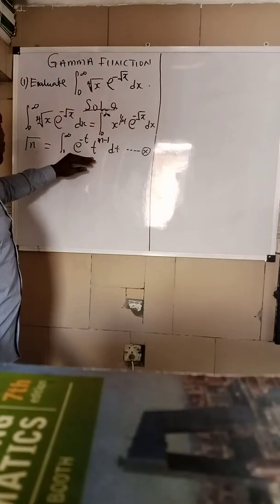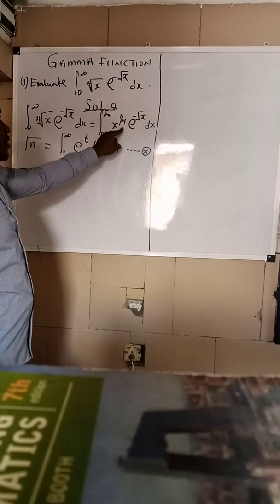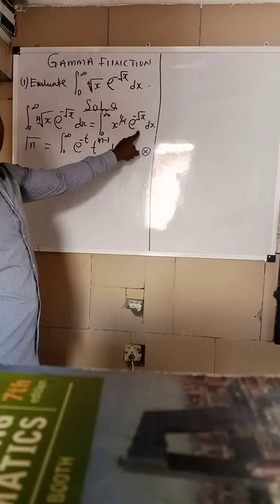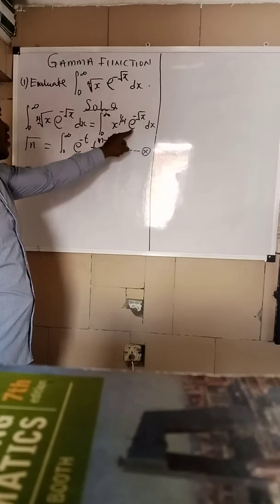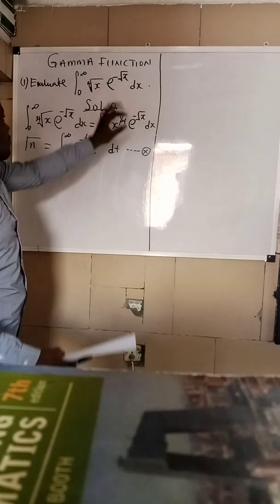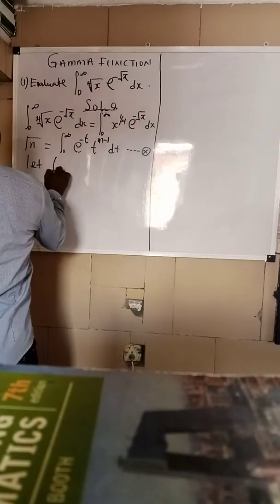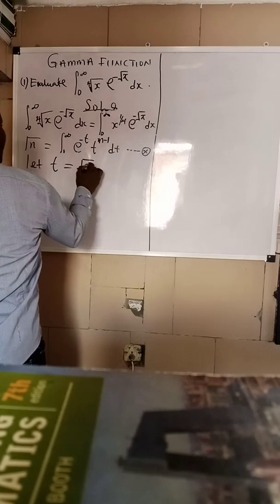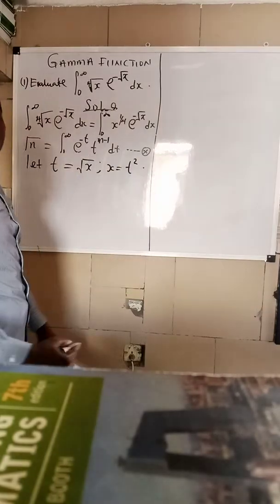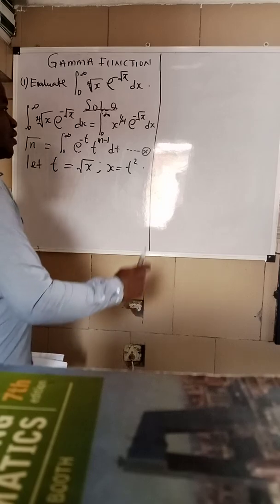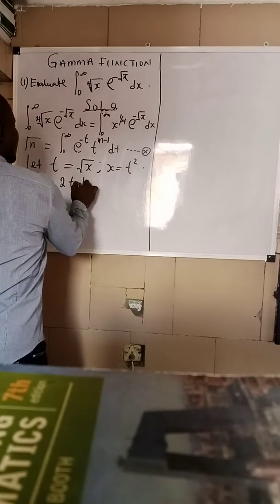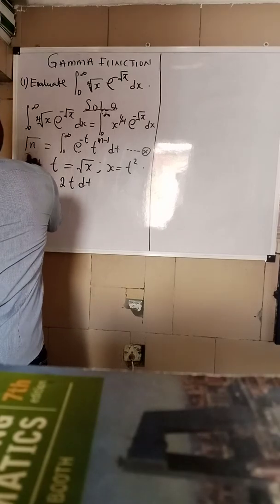We are going to compare this general definition to the equation given to us. Anytime you are asked to evaluate any problem on gamma function, always concentrate on the exponential parts. Comparing the exponential parts, we find minus root x and minus t. So we let t equal root x. This implies, squaring both sides, that x equals t squared. From here, differentiating, dx equals 2t dt.